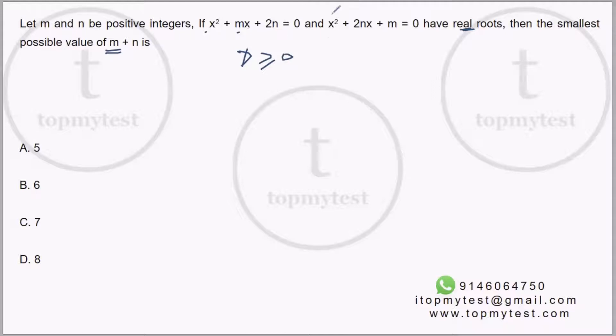Let's apply the discriminant rule and figure out. From the first relation you will get m² - 8n ≥ 0. From the second one I will get 4n² - 4m ≥ 0.